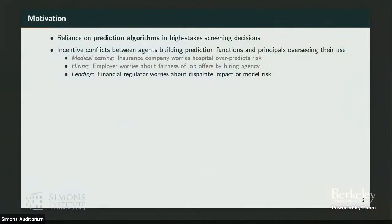The motivation is the increased reliance on prediction algorithms in many high-stakes screening decisions. In many of those decisions, we may be worried about incentive conflicts between those who develop or use the algorithm and a regulator who cares about the implications of their use. For example, in medical testing, an insurance company may worry a hospital using an algorithm is over-testing. In hiring, an employer may care about equity of job offers while a hiring agency may not.